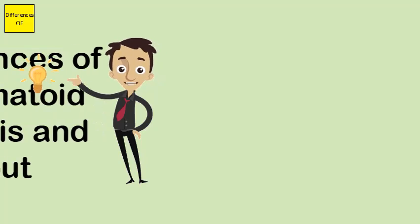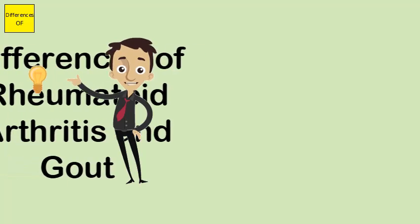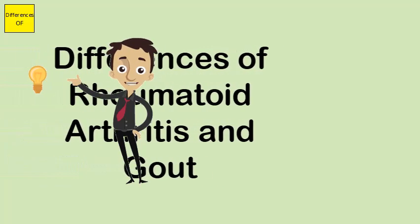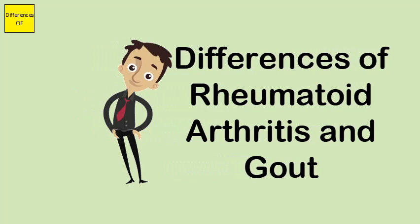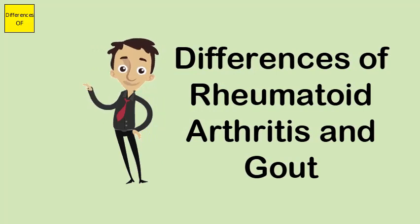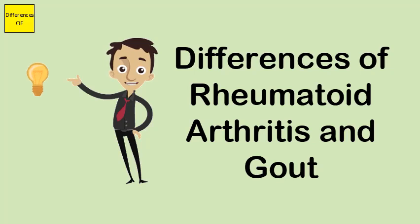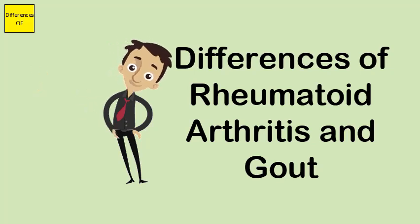Difference between Rheumatoid Arthritis and Gout. Rheumatoid arthritis, or RA, is an autoimmune disorder. Gout is a form of acute arthritis.